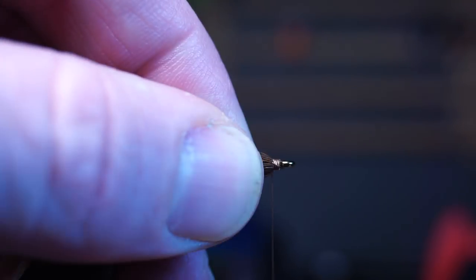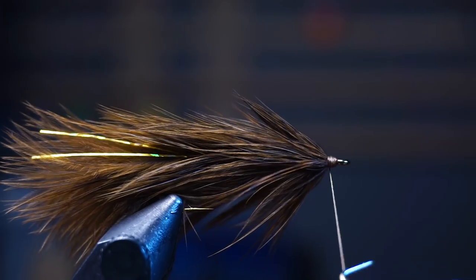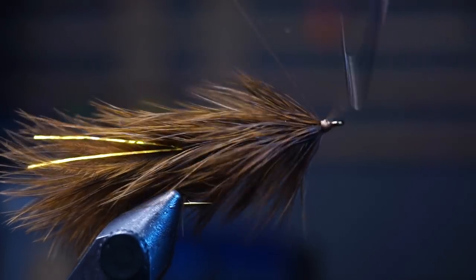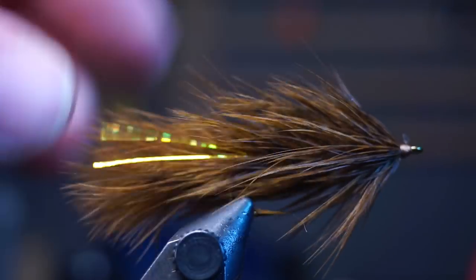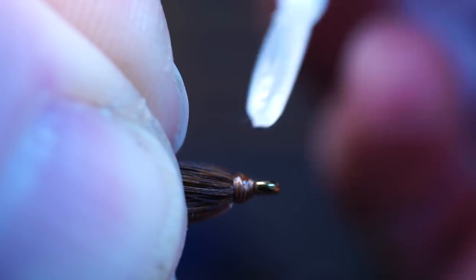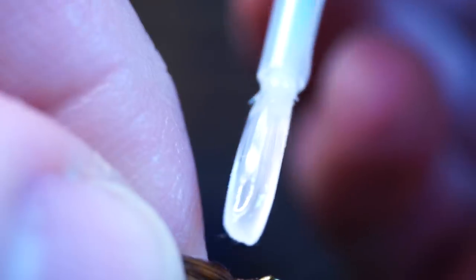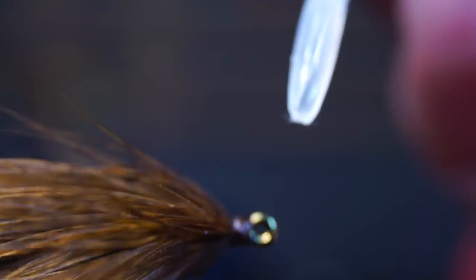Now you can clean up the head section with a few smooth wraps and whip finish your fly. Of course, you're going to want to comb out the fly once again before adding some head cement. I like adding this UV resin instead of head cement because it cures so quickly and makes a nice glossy finish.